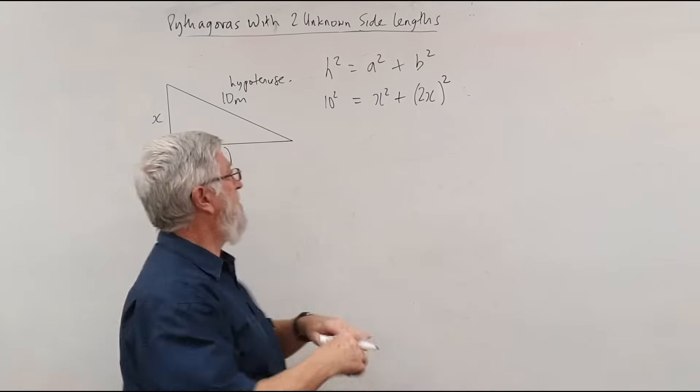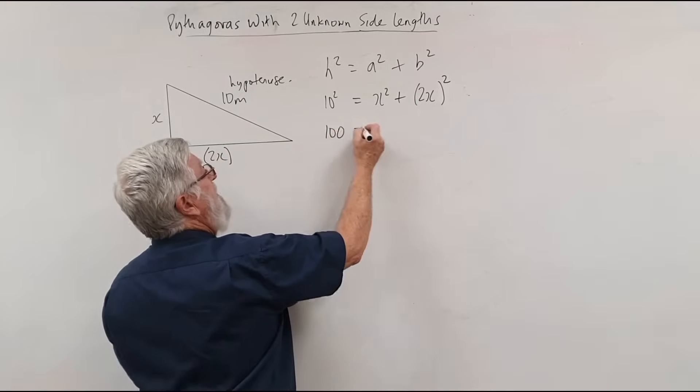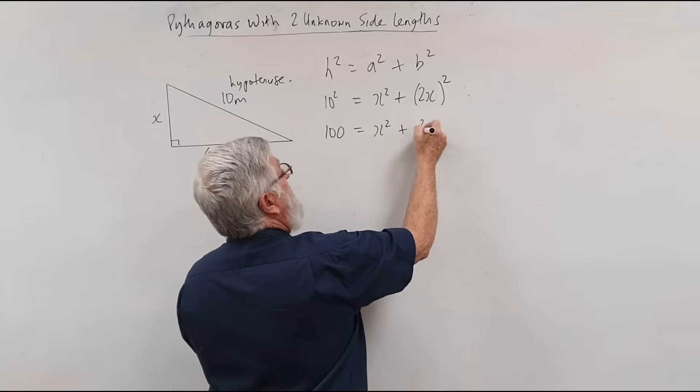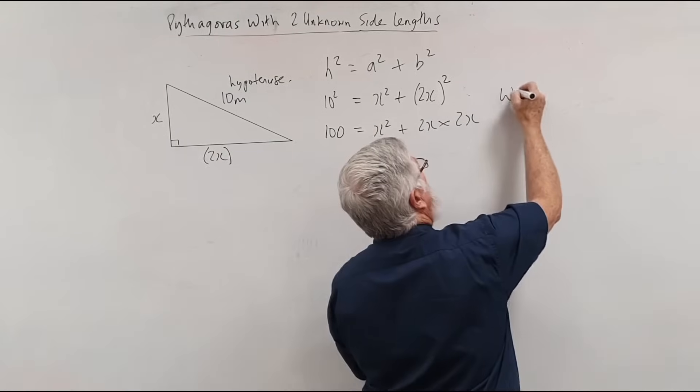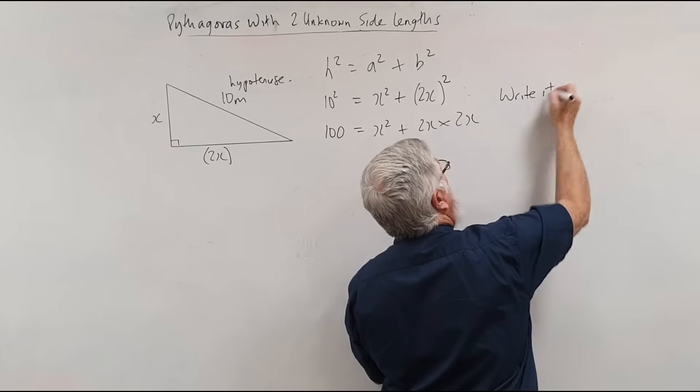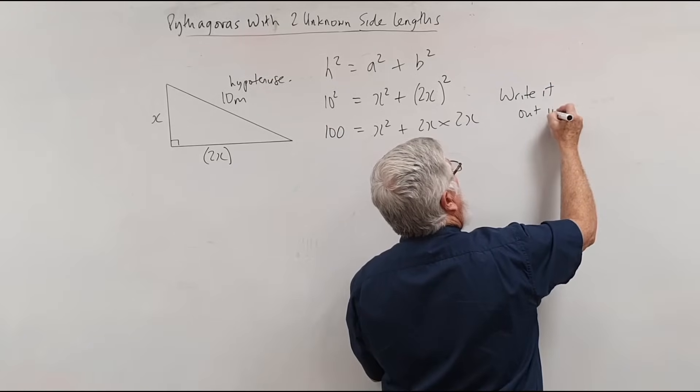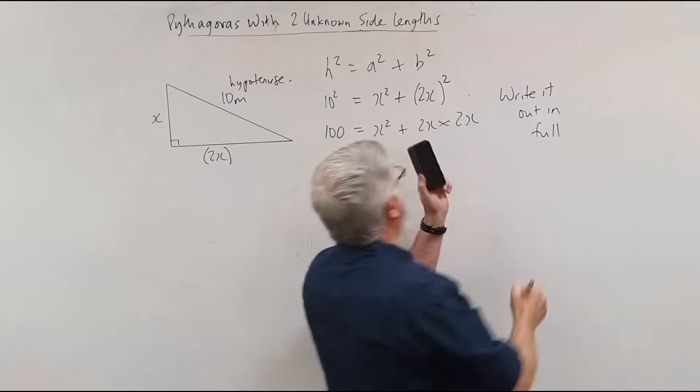What we put the bracket for is this isn't going to stay at 2, it's going to become a 4. So I do it the long way for those who need it. There's x squared and this is now 2x times 2x. I talked about it, when I was at school I'd get stuck and I'd write it out in full.